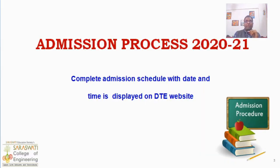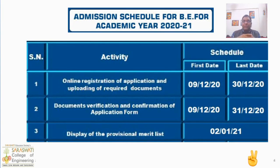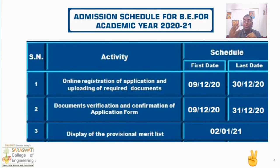We are giving information on the admission process of 2021 for engineering, and the complete admission schedule with date and time is already displayed on the DTE website. You can also check there. This is the updated admission schedule for the academic year 2021. The first activity is registration. We all have to do registration between 9th December to 13th December. Registration is important to participate in CAP rounds as well as to avail the scholarship facility from the government.